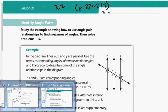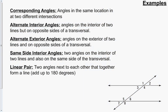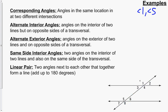So here are some of the terms. Corresponding angles are those angles that are on the same spot or location, just at two different intersections. So an example of that would be, if you look at the top intersection, angle 1, and at the other intersection — the bottom one — angle 5 is in the same spot. So an example would be angles 1 and 5.